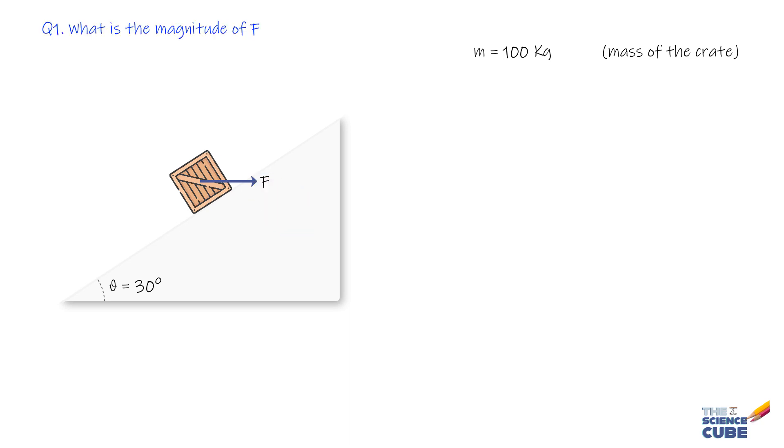The questions are: what are the magnitudes of F and the force on the crate from the ramp? For part A, we start with the information that the crate moves at a constant speed, implying acceleration A equals 0 meters per second squared, because if there is no change in speed, there is no acceleration.